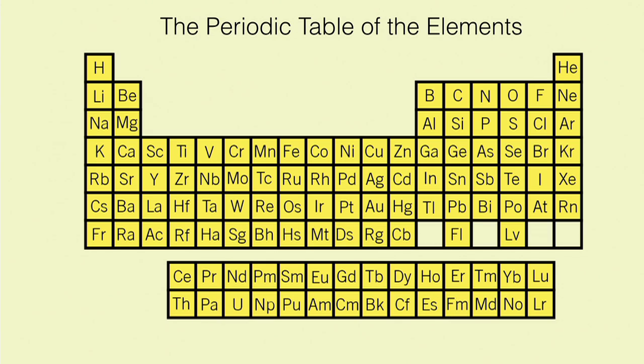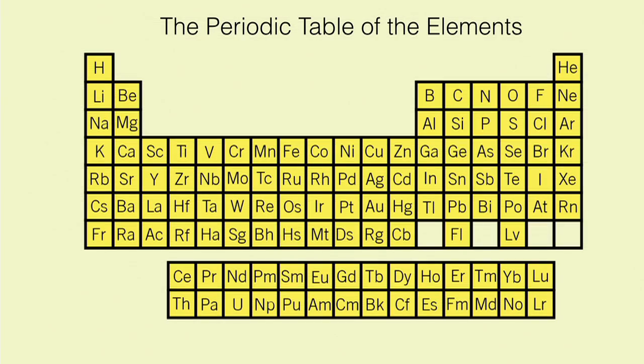So this is the periodic table. Every box in this table represents a different kind of atom, and these are all of the atoms we've ever observed. You can think of this as the Lego kit of the universe. Anything you're going to make has to be made out of these raw materials. This is all we've got to work with here.